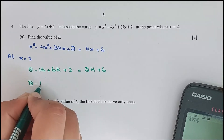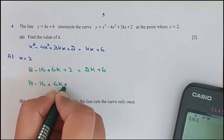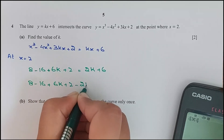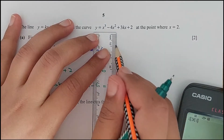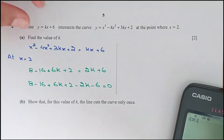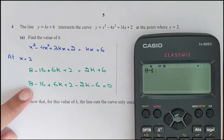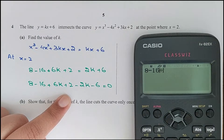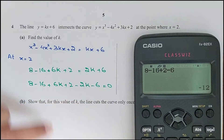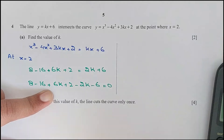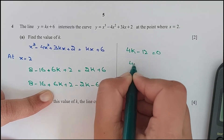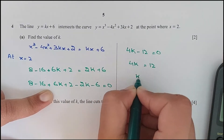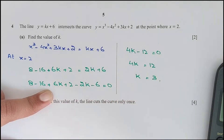Rearranging: 8 minus 16 plus 2 minus 6 plus 6k minus 2k equals 0. That gives 4k minus 12 equals 0, so 4k equals 12 and k equals 3.